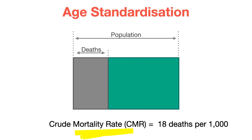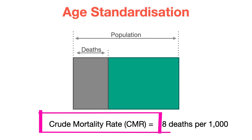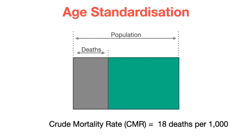Now, the question is: can we simply compare the crude mortality rate of one population to another? And the answer is no — not if they have different population structures. Let me illustrate the problem for you.